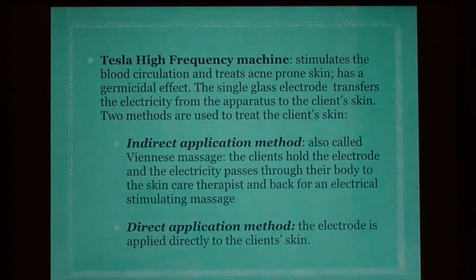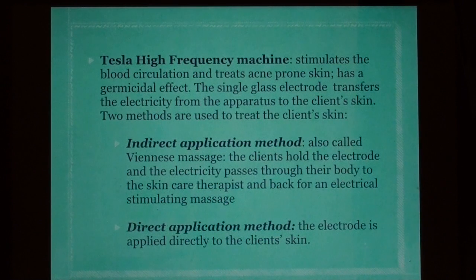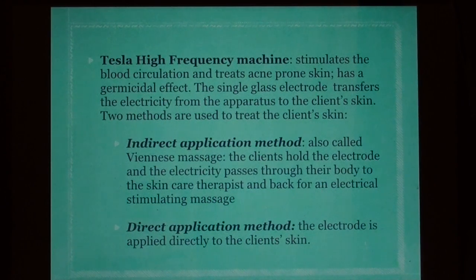Tesla high frequency machine: stimulates blood circulation and treats acne-prone skin; it has a germicidal effect. The single glass electrode transfers electricity from the apparatus to the client's skin. Two methods are used: the indirect application method, also called Viennese massage, where the client holds the electrode and electricity passes through their body to the skin care therapist and back for an electrical stimulating massage; and the direct application method, where the electrode is applied directly to the client's skin.